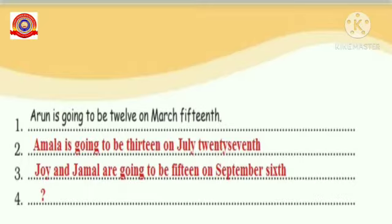Arun is going to be 12 on March 15th. Amala is going to be 13 on July 27th. Joy and Jamal are going to be 15 on September 6th. Similarly, you have to write your age and your birthday using 'going to'.